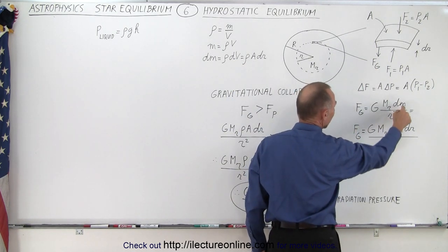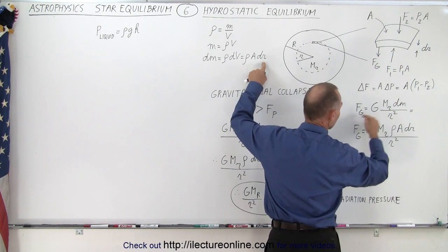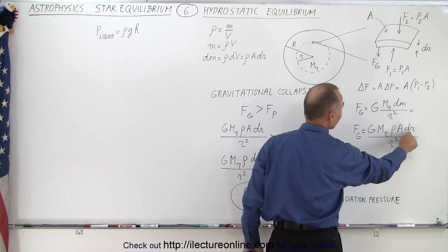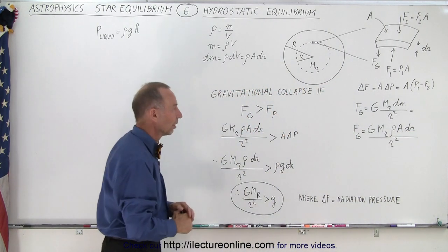So essentially, we can take dm and replace it by density times the area times dr. And now we have an equation that only depends upon r, r being the distance away from the center of the star.